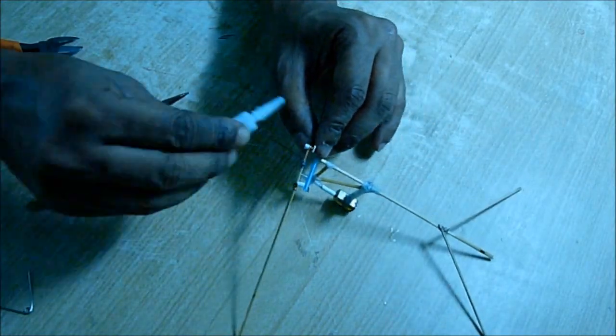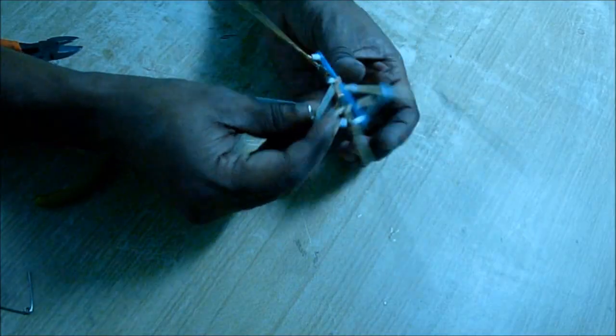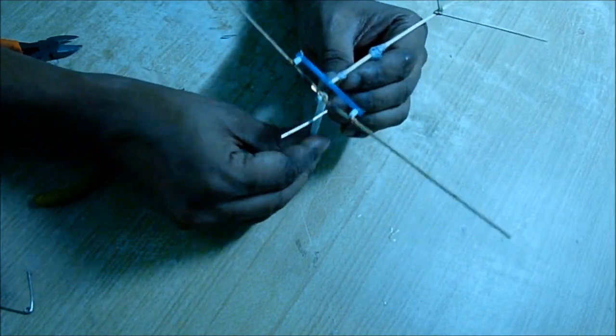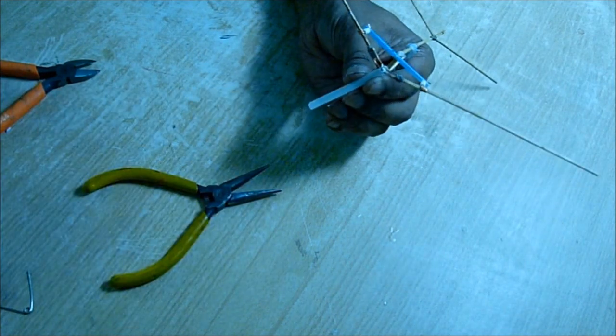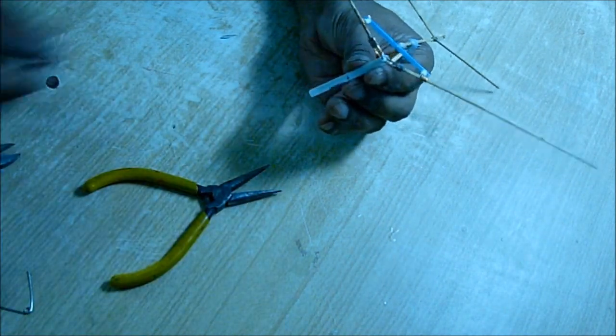On the other side, cut the extra length of the pin and put a small piece of pipe and glue it so that it doesn't come out. Now measure the longest length that shaft can go and mark there.